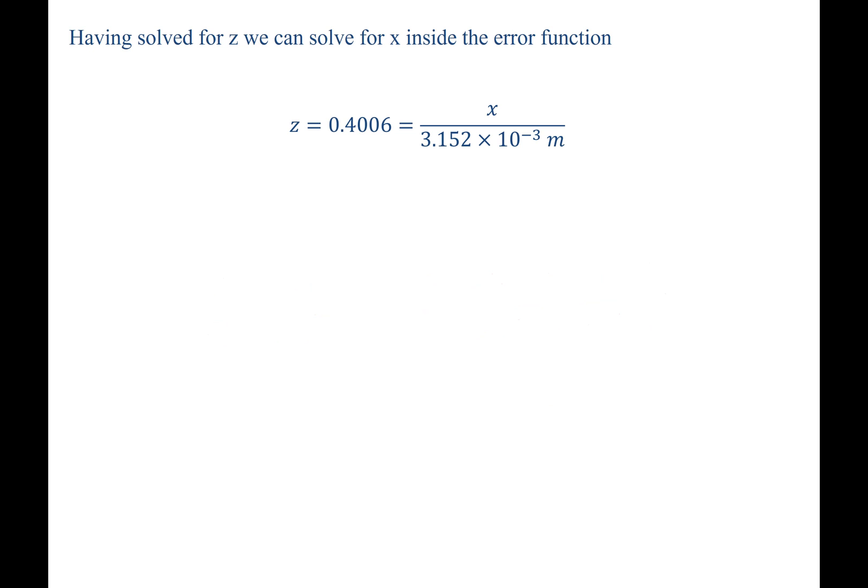Now that we know z, we can recognize that z was just substituted for what was inside of the error function, which is x over 3.152 times 10 to the negative third meters. Therefore, x, the distance that we're asked to solve for, is simply going to be 0.4006 times 3.152 times 10 to the negative third meters, which equals 0.00126 meters, or 1.26 millimeters.